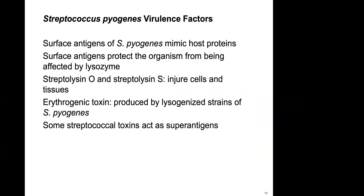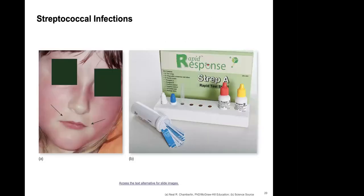Strep pyogenes has several virulence factors: surface antigens that mimic host proteins, surface antigens that protect the organism from lysozyme, streptolysin O and streptolysin S which injure and damage tissues, and various toxins that cause exacerbation of the infection.